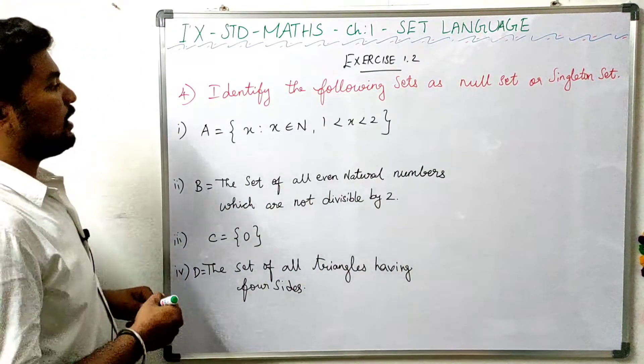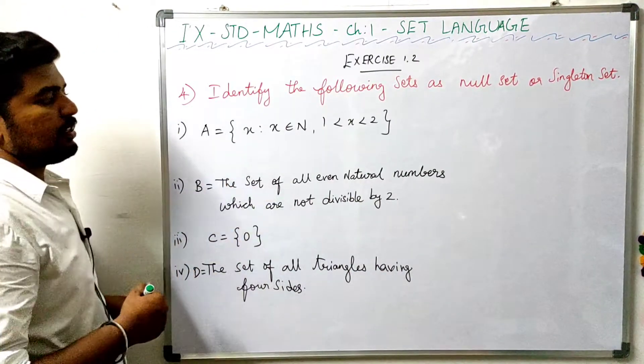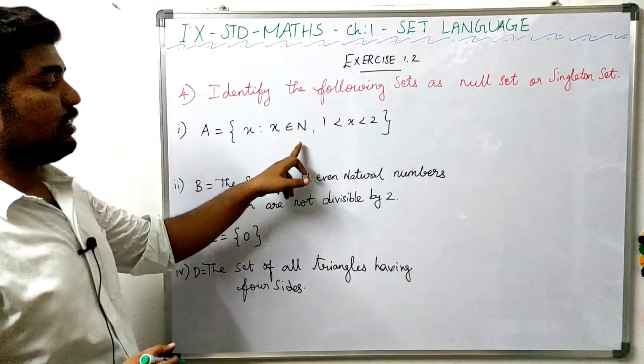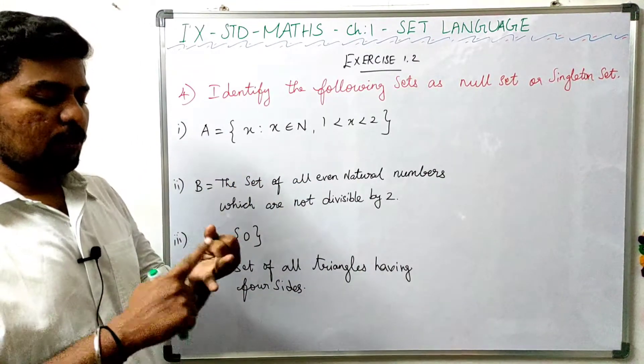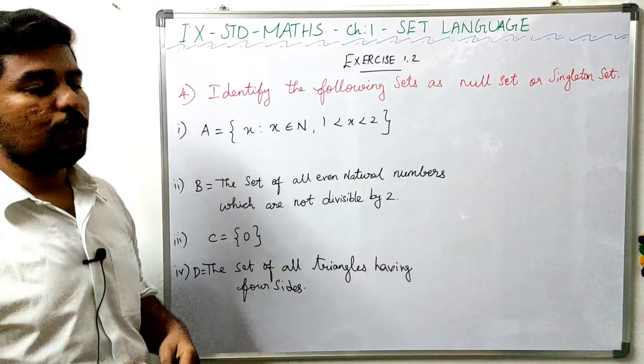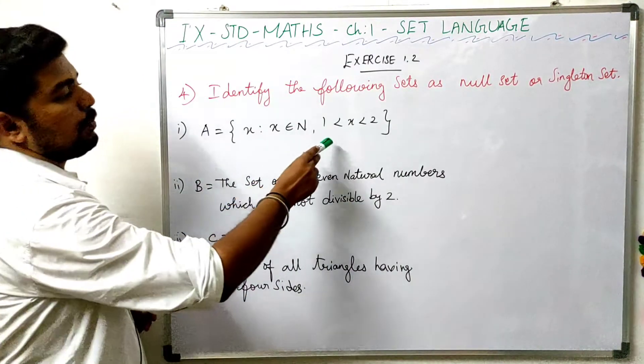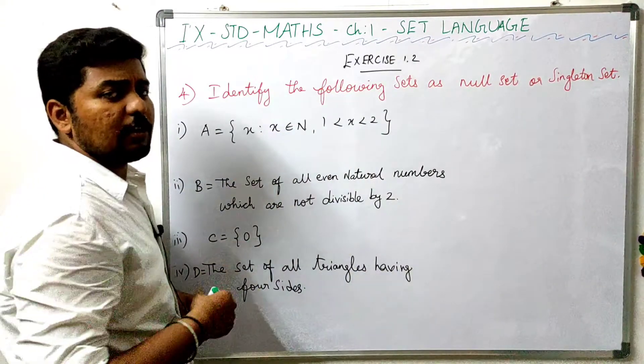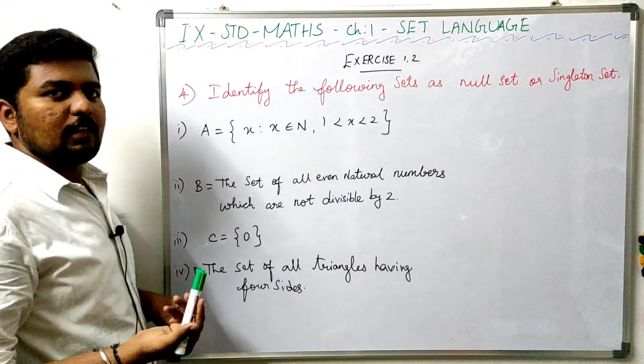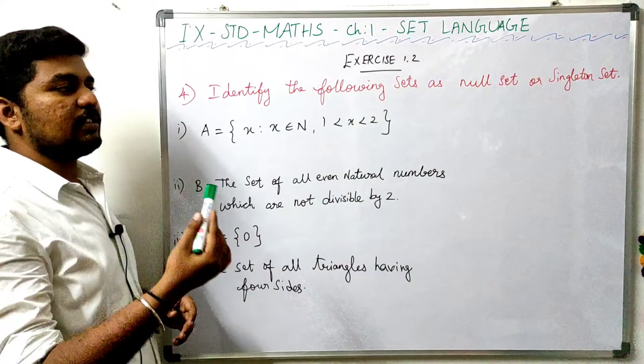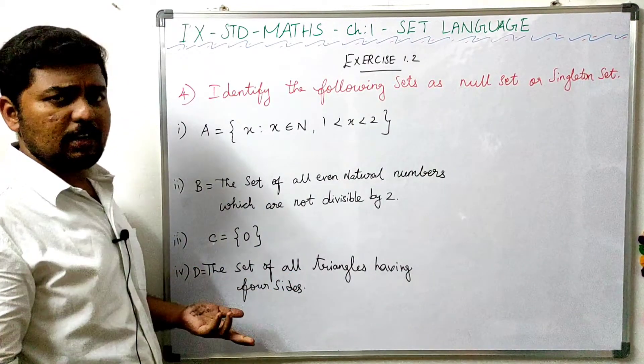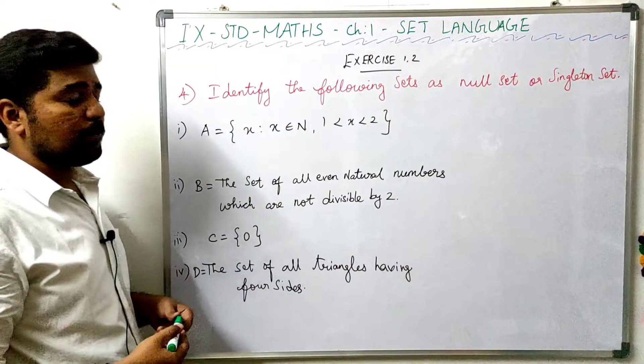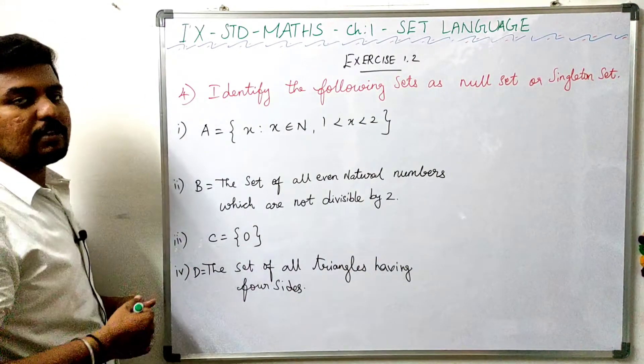A is equal to x such that x belongs to N, 1 less than x less than 2. The natural numbers start from 1, 2, 3, 4, 5, 6. How can x be between 1 and 2? No natural number is strictly between 1 and 2. If we need a number between 1 and 2, it would be a rational number, not a natural number. There are no elements in set A.